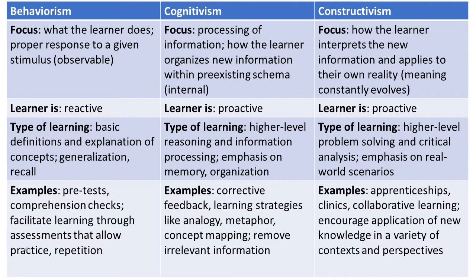In cognitivism, we have higher-level reasoning and information processing. In constructivism, we have higher-level problem solving and critical analysis, with emphasis on real-world scenarios. Examples in cognitivism include corrective feedback and learning strategies. Constructivism involves mechanisms such as apprenticeship, collaborative learning, and connectivism.